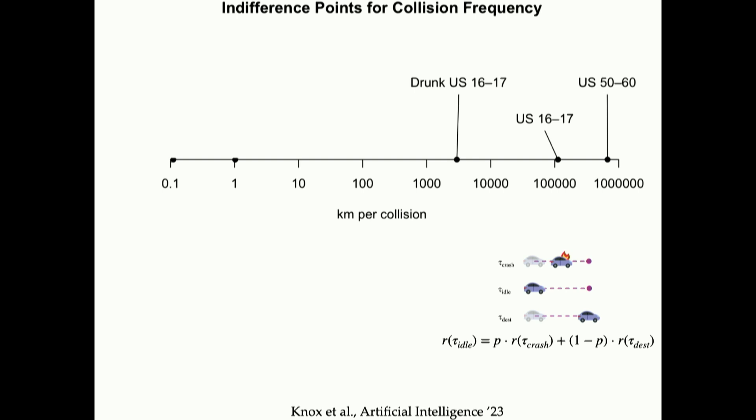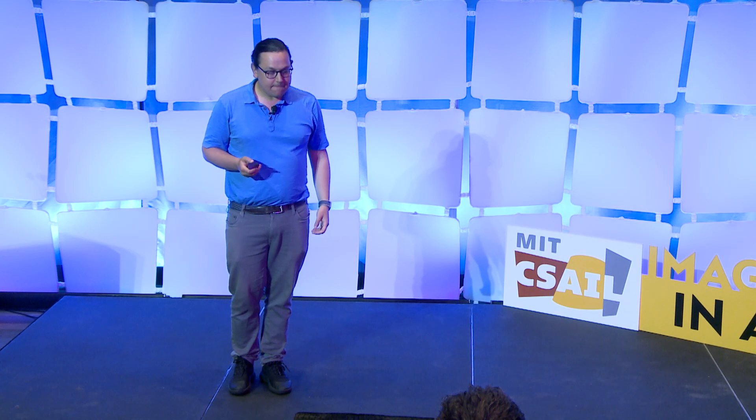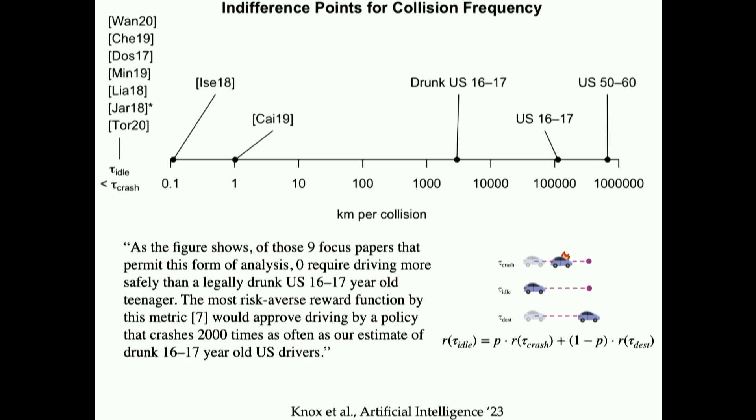Most of the reward functions that they looked at were over there, these two down here. And then actually most of them failed a basic sanity check where they didn't even make it onto this plot. They summarized it pretty well, which is to say that nine of the papers they looked at, zero required driving more safely than a legally drunk 16 to 17 year old. The most risk averse reward function by this metric would approve driving by a policy that crashes 2,000 times as often as our estimate of drunk 16 to 17 year old US drivers.